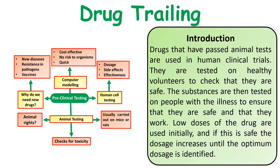Drugs that have passed animal trials then move on to human trials. They are tested on healthy volunteers to check that they're safe. The substances are then tested with people with the illness to see the dosage that they work at.